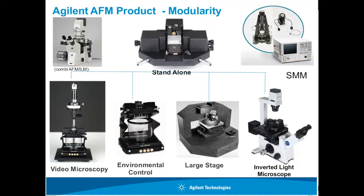We have several AFMs that can be used for this scanning microwave microscope. Here you see an overview of our Agilent product modularity, ranging from simple AFMs to more complex AFMs. For instance, the large stage AFM has very low damping so mechanical noise is low and you get very good resolution topographical images. On the upper right, you see the SMM sketch showing a simple AFM with a network analyzer, which I'll come to in more detail.